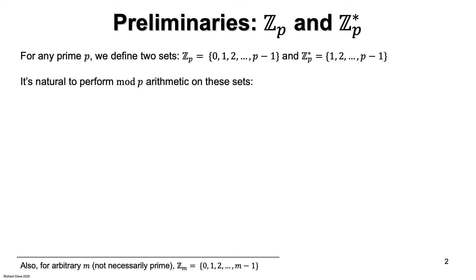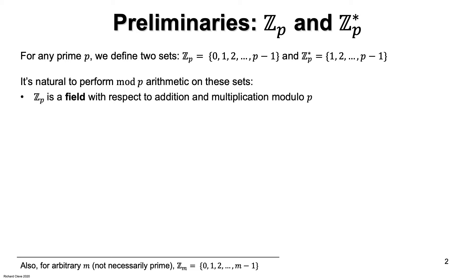It's natural to perform addition and multiplication on these sets in modulo P arithmetic. ZP is a field, which, without getting into the detailed definition, means that it has the key algebraic properties that the real numbers and the complex numbers have. In particular, every non-zero element of ZP has a multiplicative inverse. This would not hold if the modulus P were not a prime number — for example, 3 has no inverse in modulo 6 arithmetic.